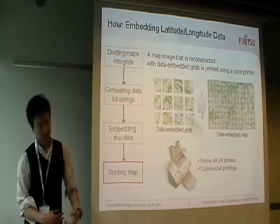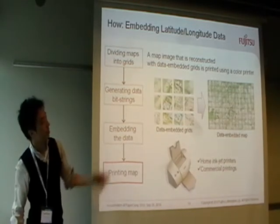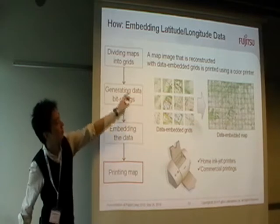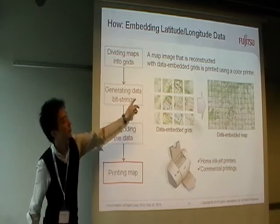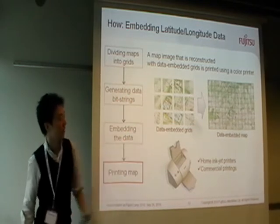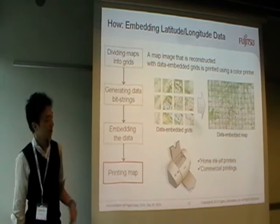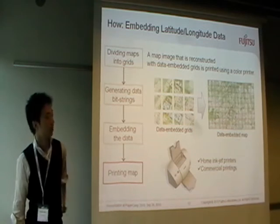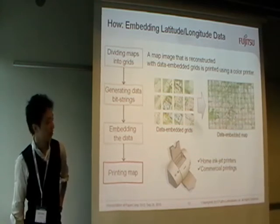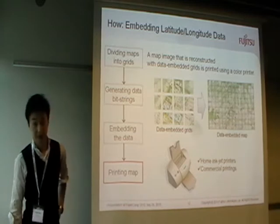In the final steps, a map image that is reconstructed with the data embedding grid is printed using color printers. Both home inkjet printers and commercial color printing can be used.